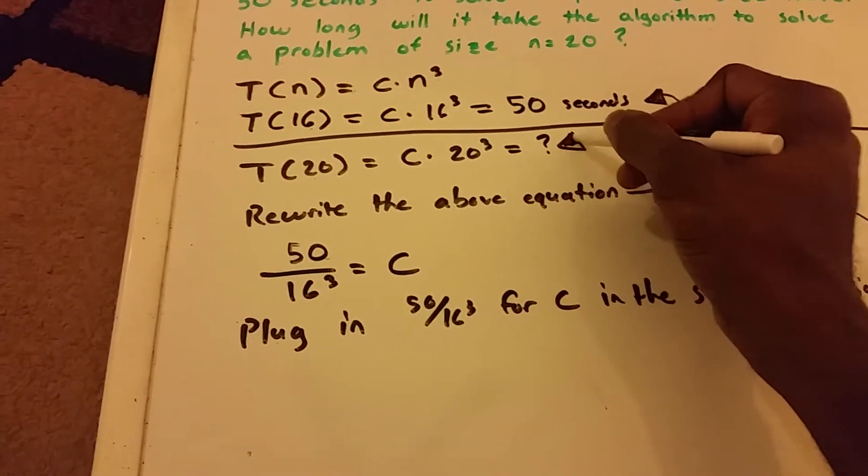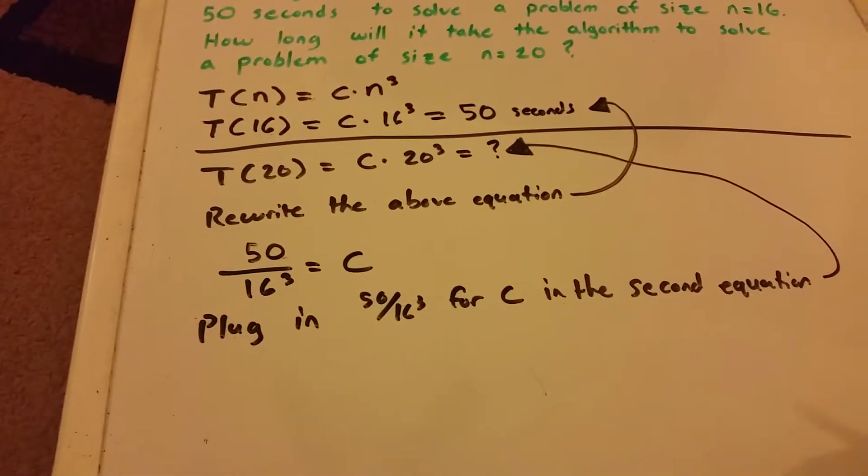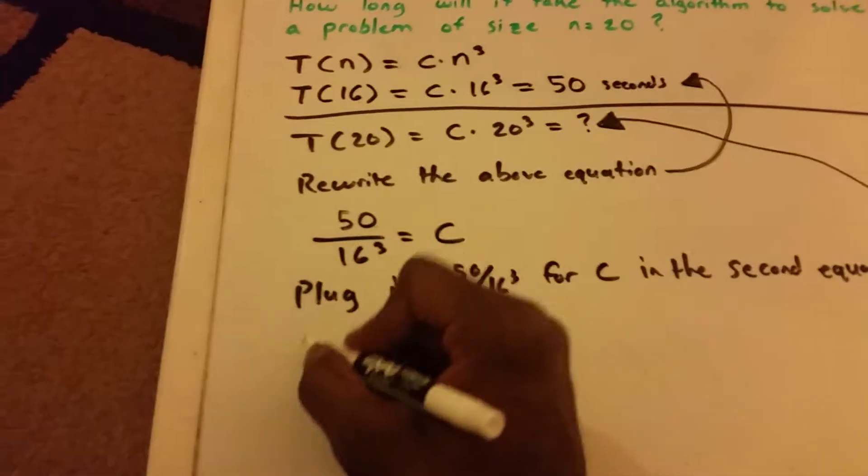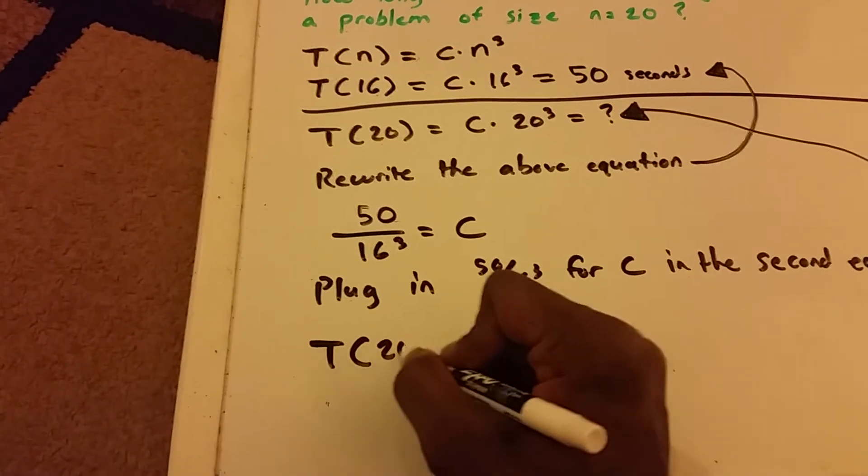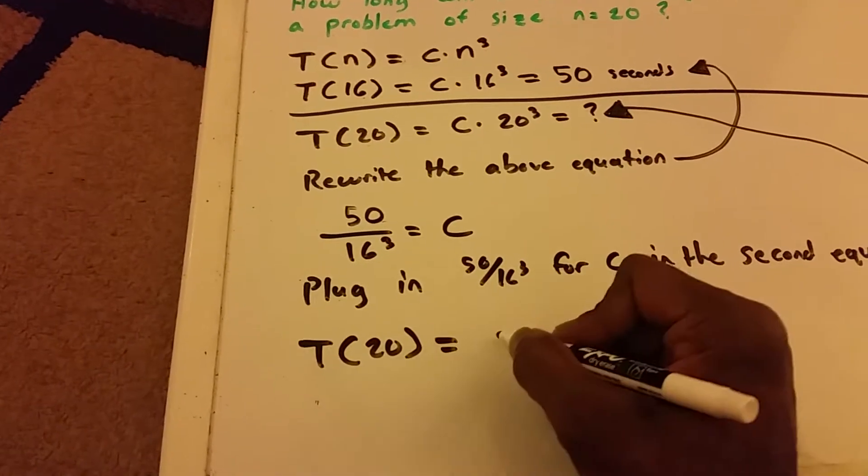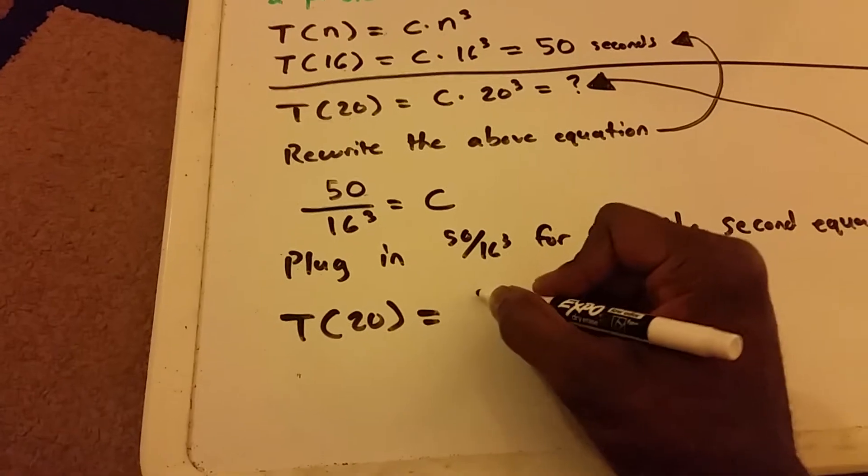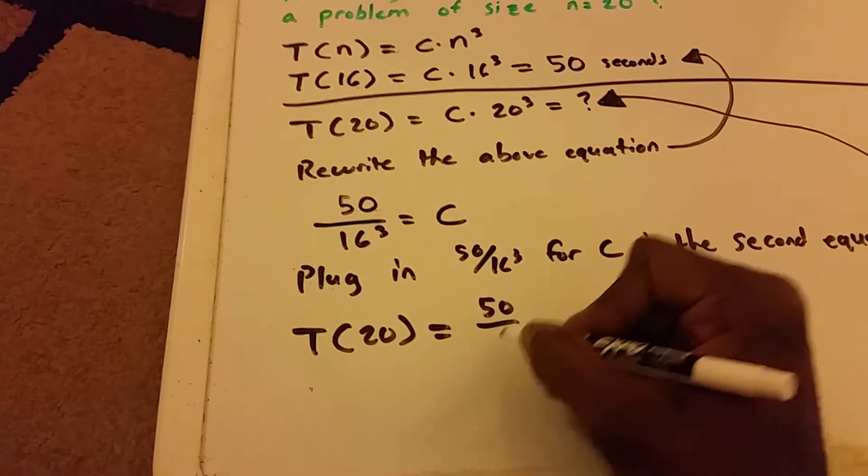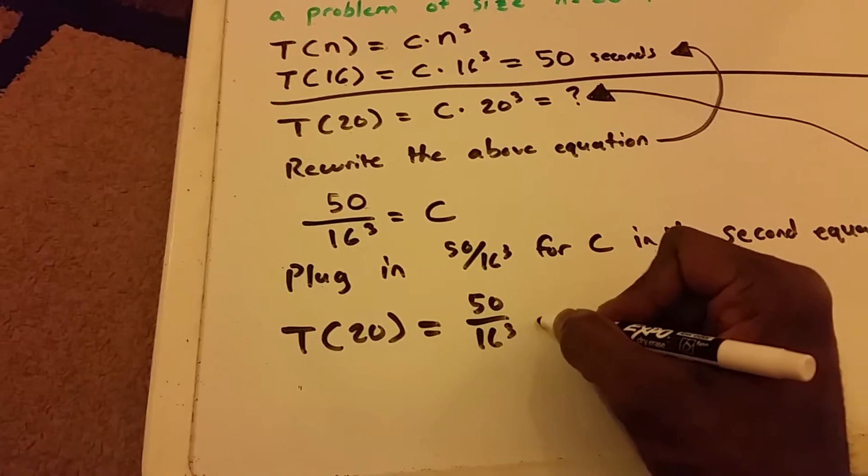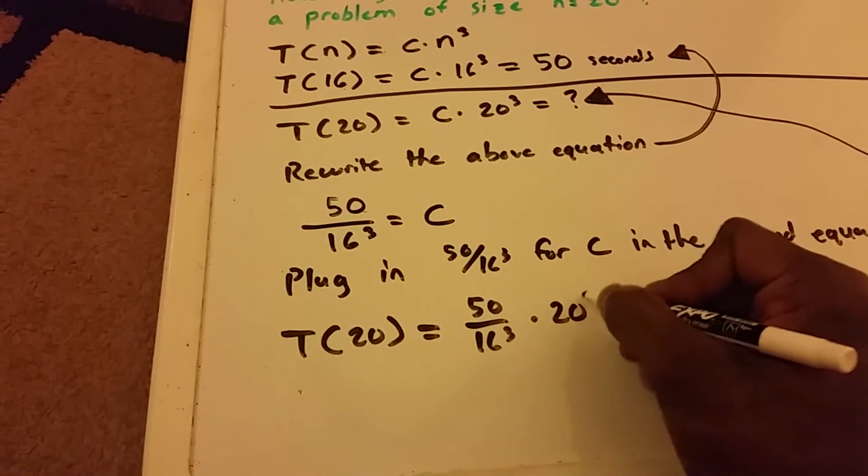So we're just going to plug it in for this equation here. So now we get T of 20 is equal to 50 over 16 cubed times 20 cubed.